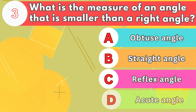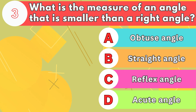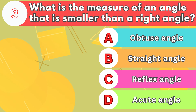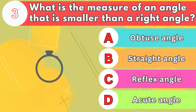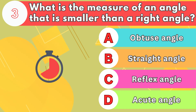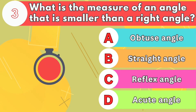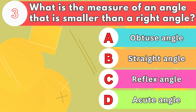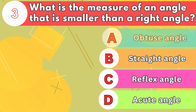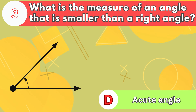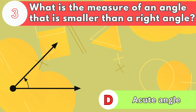Number 3. What is the measure of an angle that is smaller than a right angle? The answer is letter D, acute angle.